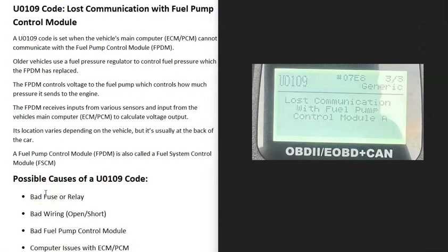Today I'm talking about a U0109 code — what it is and how you go about fixing it. The U0109 code is a lost communication with fuel pump control module.